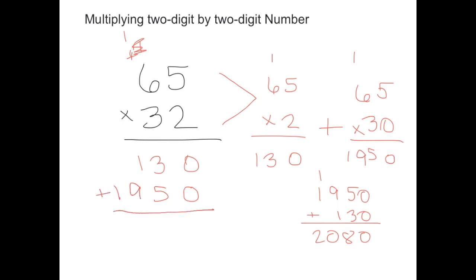Now I'm ready to add. And as you can see, two thousand eighty is equal to two thousand eighty.